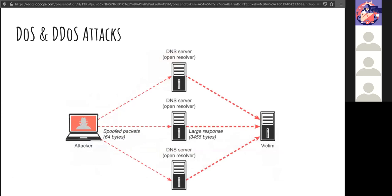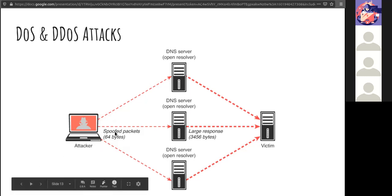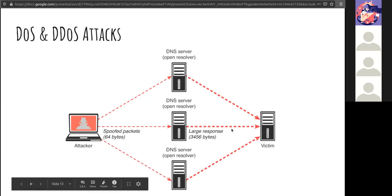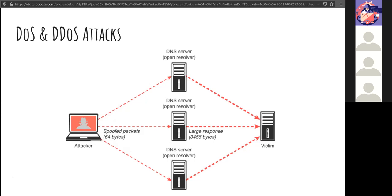Here is another form of DDoS: amplification. In this form, the response traffic sent by the unwitting participant is larger than what was initially sent by the attacker. The attacker sends a spoofed packet of 64 bytes, and the large response comes back at 3,000 bytes, overwhelming the actual victim. All these types of attacks are occurring in the wild.